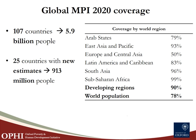The 2020 Global MPI covered 107 countries representing close to 5.9 billion people, with new or updated estimates for 25 countries covering more than 900 million people. At the global level, surveys covered represent 78% of the world population. The measure focuses on developing regions, where coverage is about 90%. The highest coverage is in Sub-Saharan Africa, followed by South Asia; the lowest is in Europe and Central Asia.